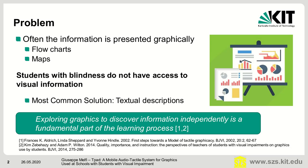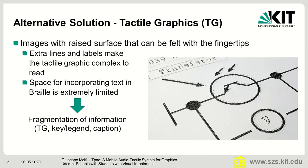In educational environments, a lot of information is presented graphically, but students with blindness don't have access to this visual information. A possible solution is to provide a description of the graphic, but exploring a graphic to discover information independently is a fundamental part of the learning process. A better solution is tactile graphics, learning materials that use raised surfaces, but space for including text in Braille is extremely limited. This means that on the tactile graphic we have only graphic elements and short labels, and the textual information is moved into a key document, causing fragmentation of information. The key document can be embossed in Braille or can be a digital text file read with a screen reader.